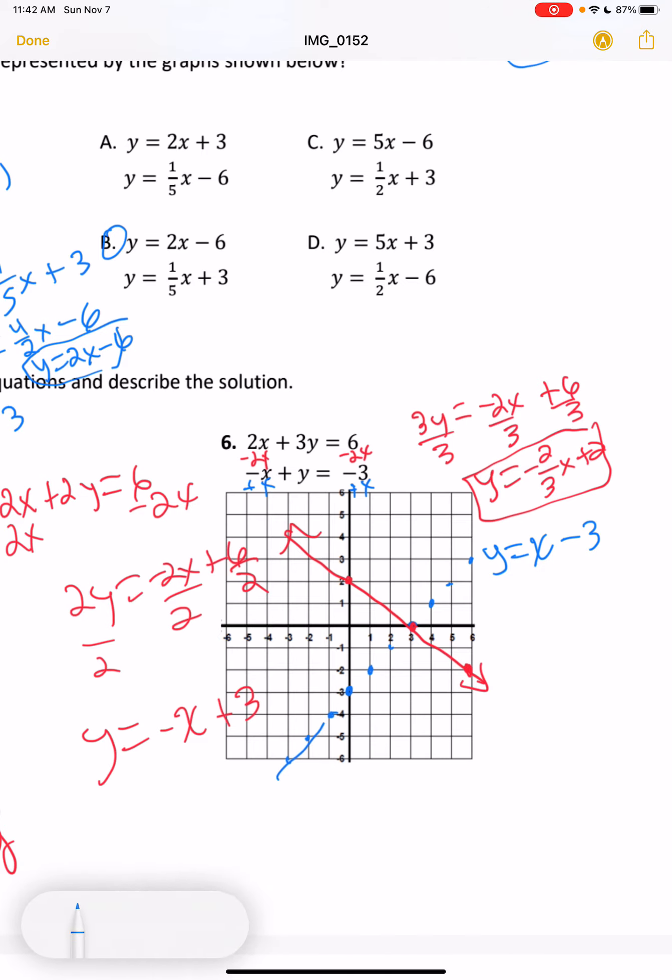So with this, we do have our solution. It's the point that they cross. It crosses right here at 3 on the x-axis and 0 on the y-axis. So this would be a one-solution equation.